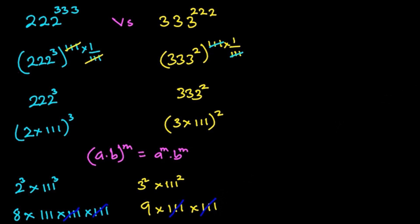So we have 8 times 111 times 111, then 9. 8 times 111 is the same as 888, and then here we have 9.